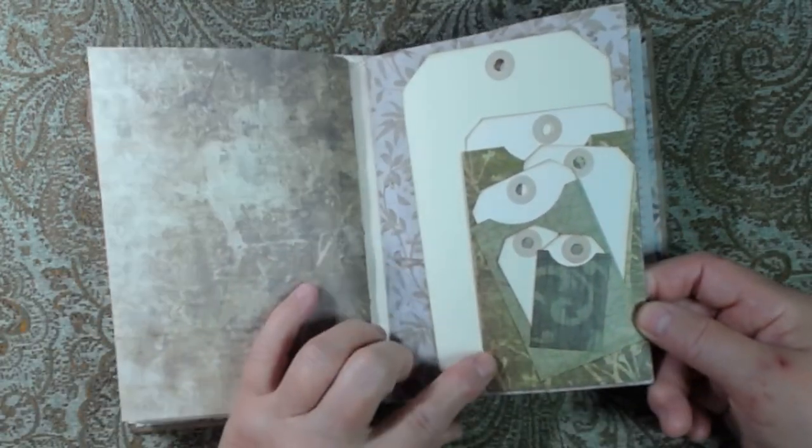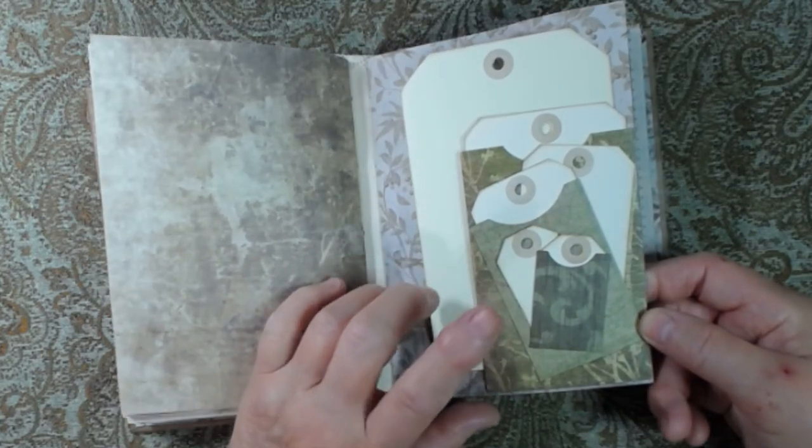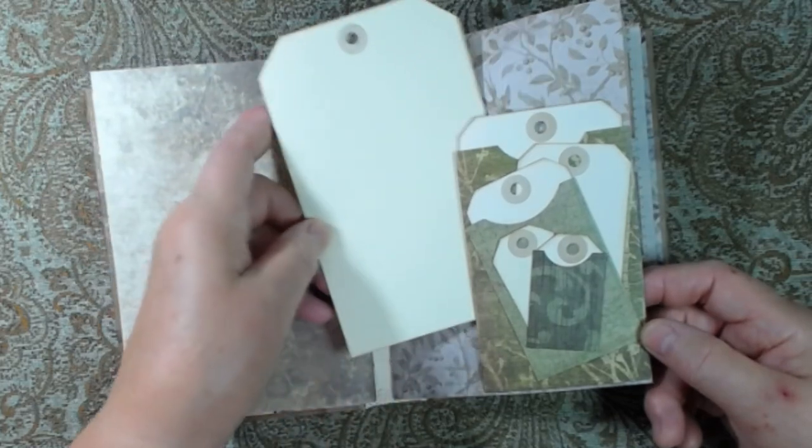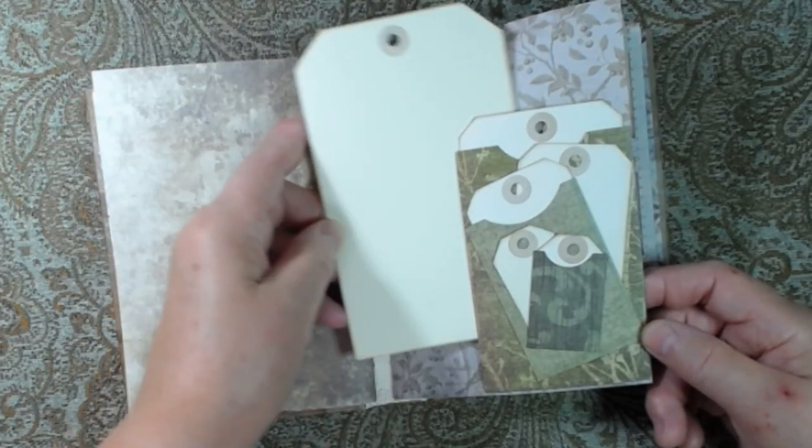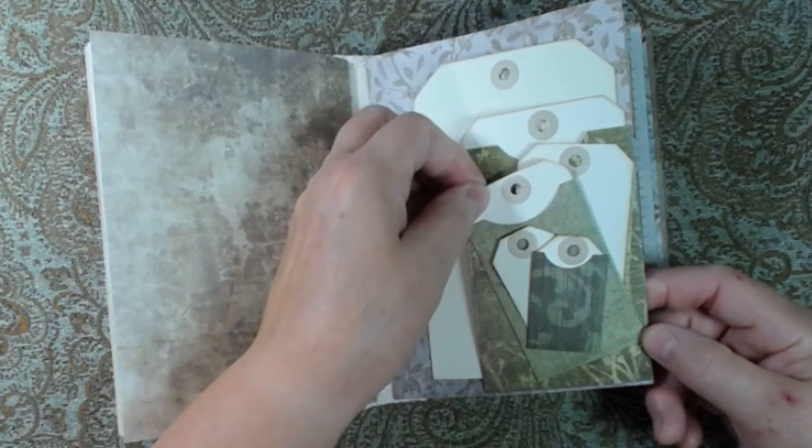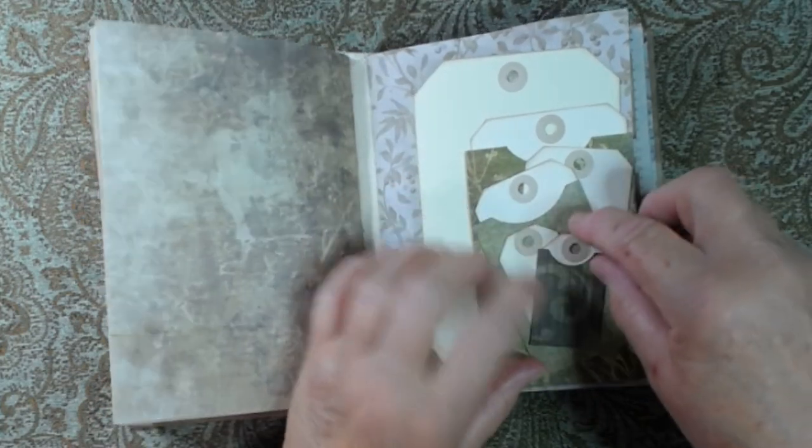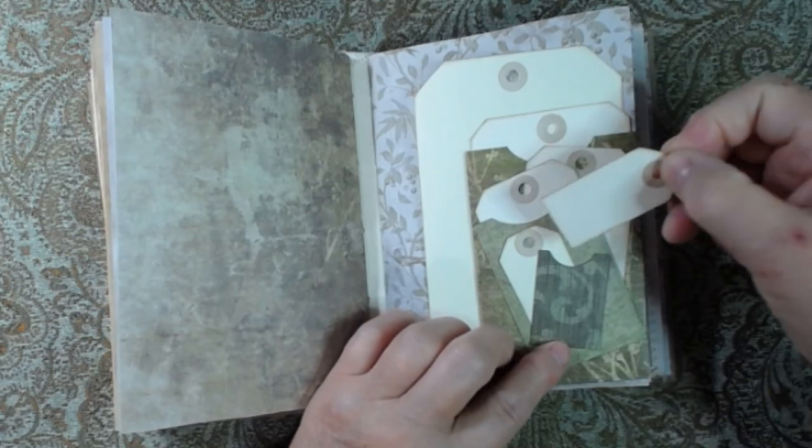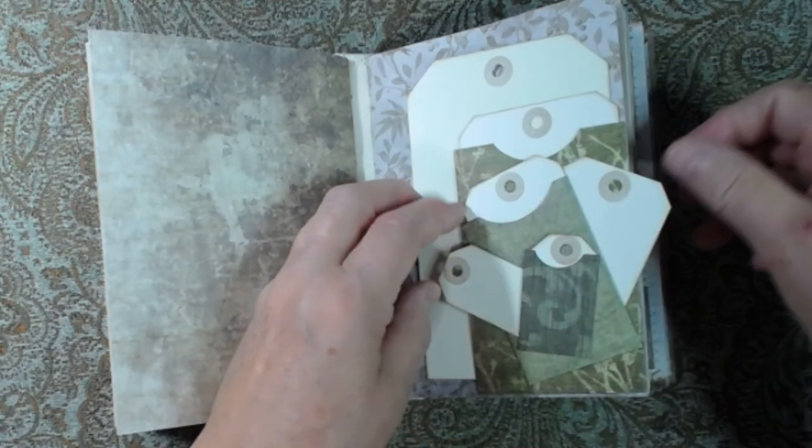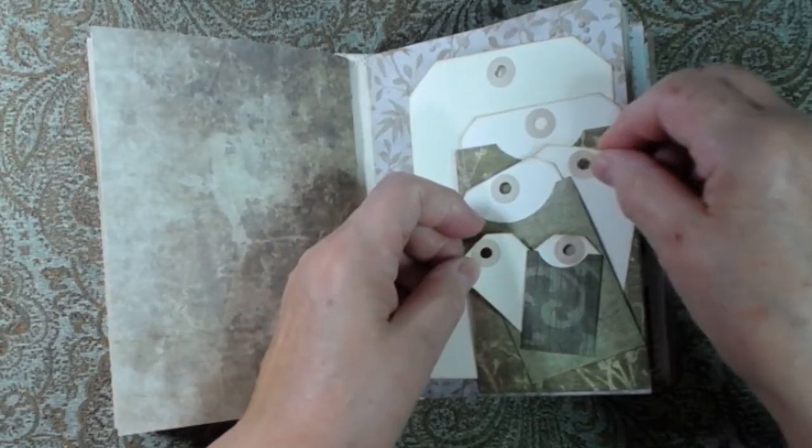On the cover of this one, we have another one of Didi's pockets from her challenge. There's a large tag behind, and a tag in each of the pockets. Itty-bitty. And one behind the pockets also.